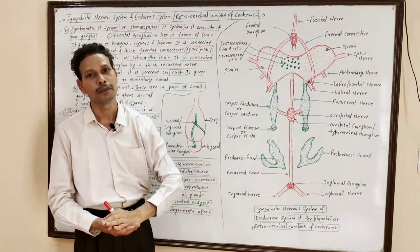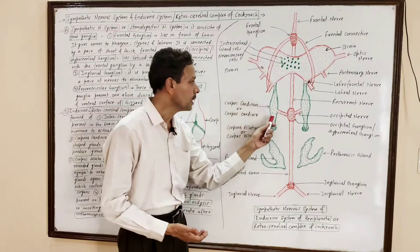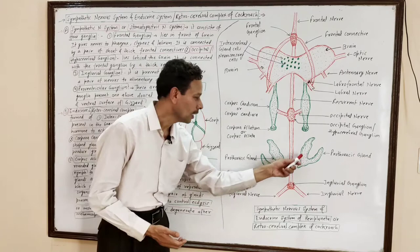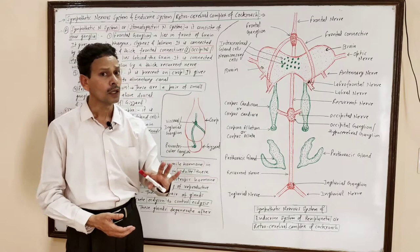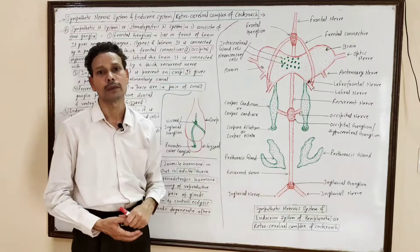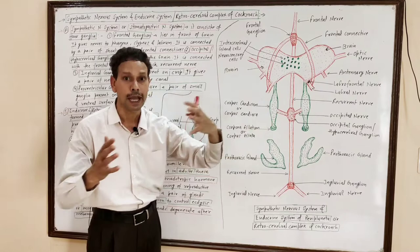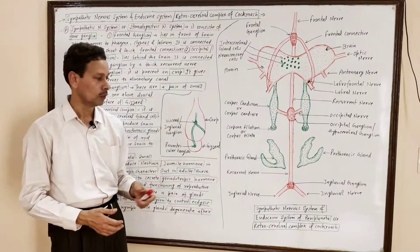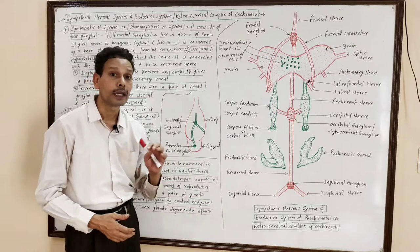This hypocerebral ganglion gives a pair of occipital nerves to the endocrine glands — the corpus cardiaca. The third ganglion lies on the crop region of the alimentary canal and may be named the visceral ganglion or inglovial ganglion. This ganglion gives a pair of nerves to the crop region and alimentary canal, and one nerve goes to the proventricular ganglion.